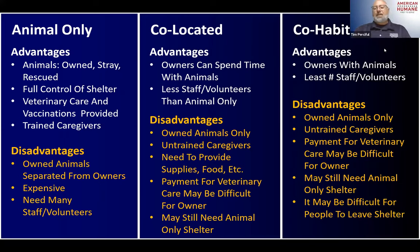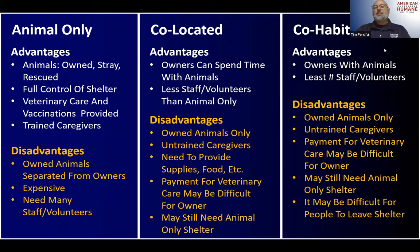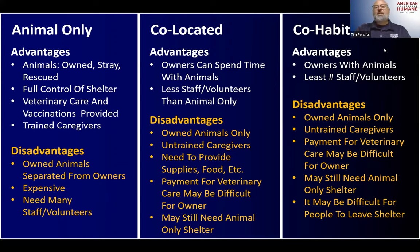Co-habitated shelters: the plus is people are with their pets all the time, providing all the care. A challenge is it might be difficult for people to leave because their pets are there. What often happens is people get to know each other within the shelter and end up taking care of each other's pets. It's also important to still have a human-only shelter for people that don't have pets.